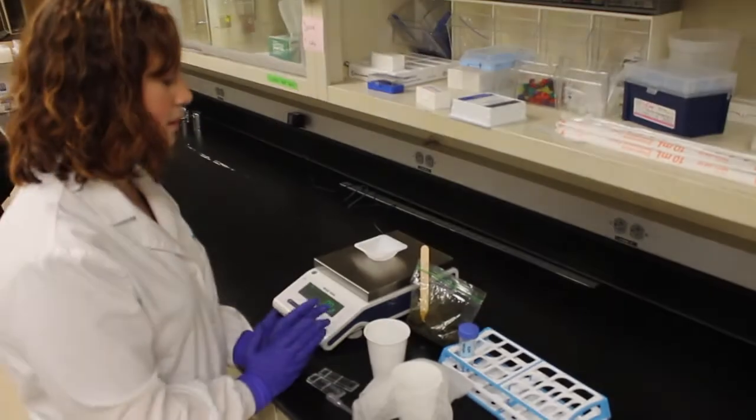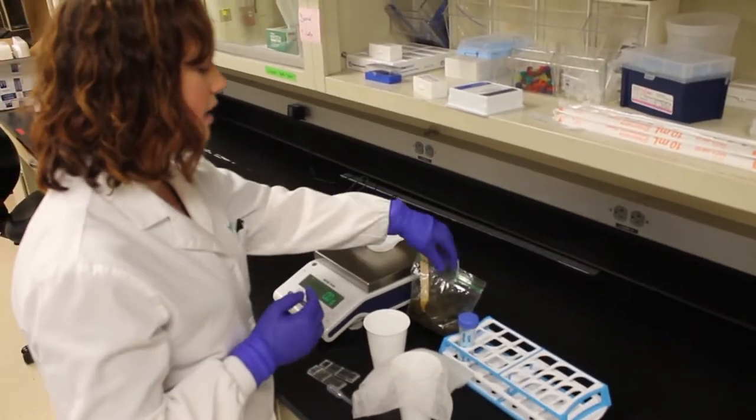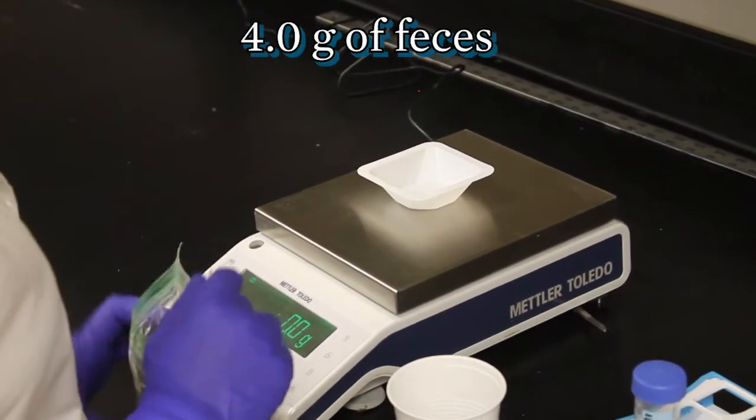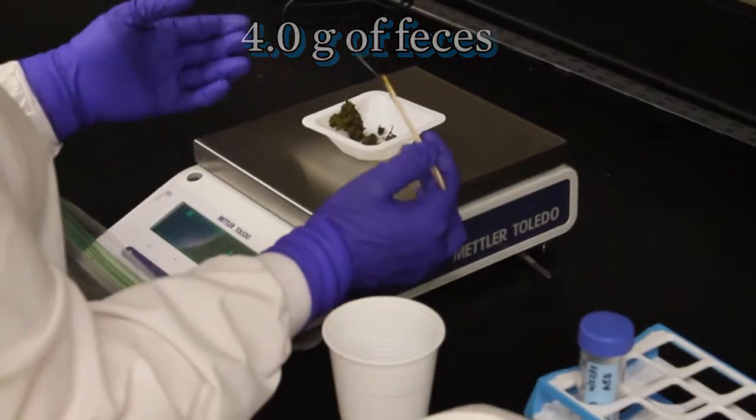Our first step in performing this modified McMaster's technique is to take our feces, which right here we have horse, and measure out exactly four grams. So now that we have exactly four grams of feces,